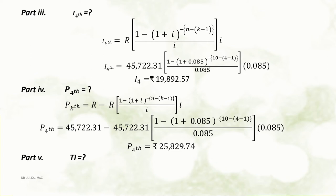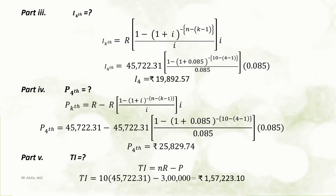Part 5: Here we want to calculate total interest. Total interest paid can be calculated using the formula: amount of installment multiplied by number of installments minus present value. After calculation, we get the value of total interest as Rs 1,57,223.10.